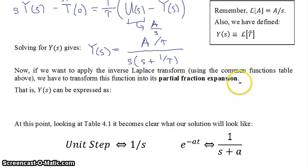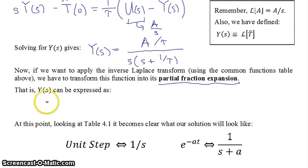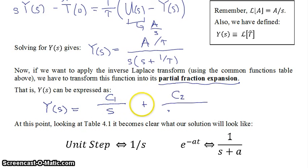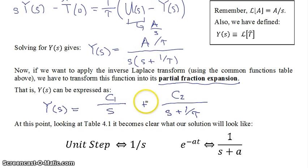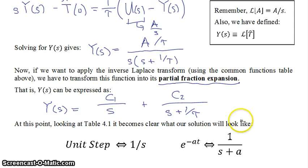To do that, we use something called partial fraction expansion. Anything that looks like our Y(s) can be re-expressed as: Y(s) equals C1 over s plus C2 over (s plus 1 over tau). We split the denominator into two separate terms, each of which can be individually inverted using the table.